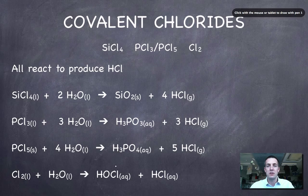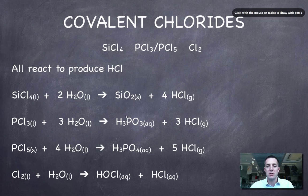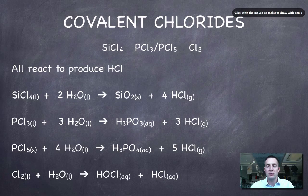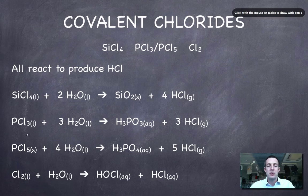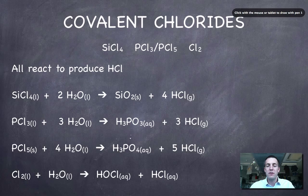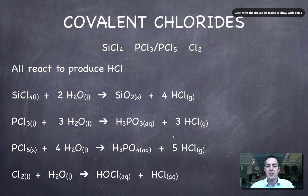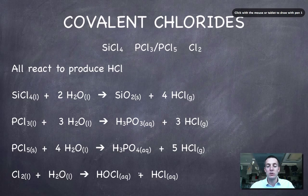Let's quickly talk through these reactions. You have to remember these equations, so make a note of them and try and start memorizing them. Silicon tetrachloride produces silicon dioxide and hydrogen chloride. The two phosphorus chlorides produce different forms of acid: this is phosphorous acid, this is phosphoric acid, and they're both producing hydrogen chloride as a byproduct. And chlorine, when you dissolve it in water, also produces HCl and it also produces hypochlorous acid, which is bleach.